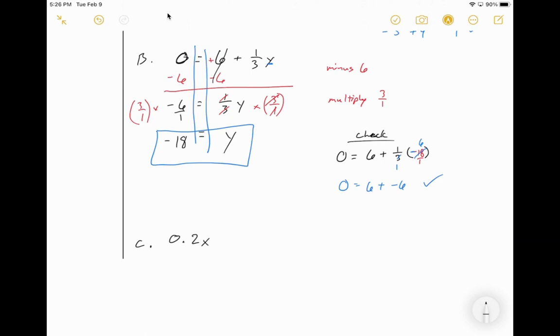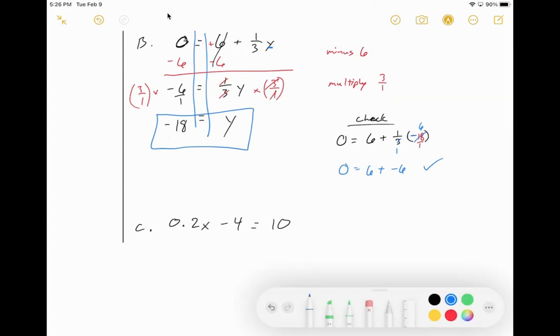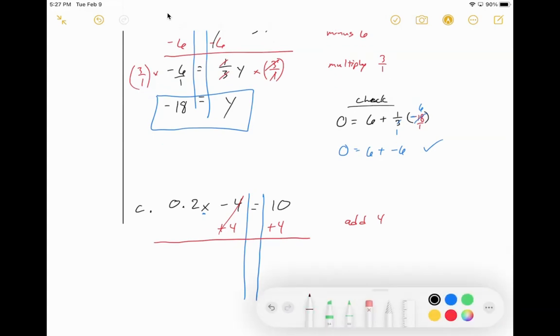All right. Let's say this. 0.2x minus 4 is equal to 10. So, again, let's go through the steps. Let's draw our wall. We see the variable is x. So, we've got to get rid of the 0.2 and the negative 4. So, first thing to get rid of positive 4, I'm going to add 4 on both sides. That cancels out. This becomes a 14. And this becomes 0.2x.